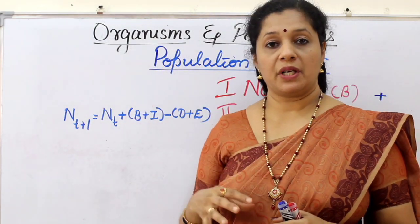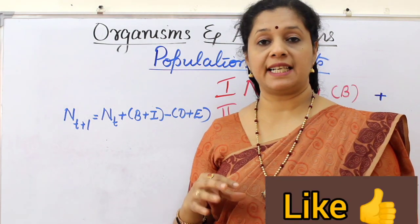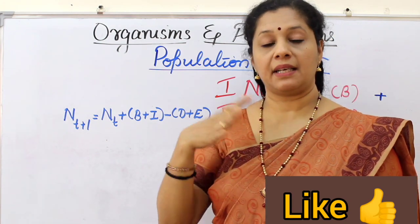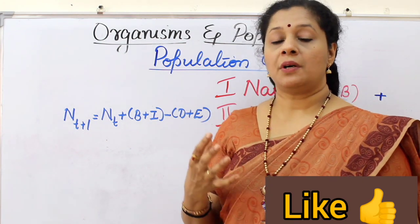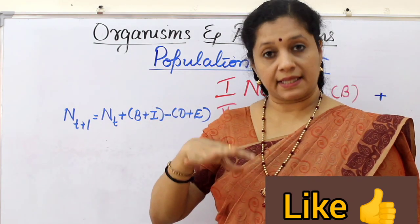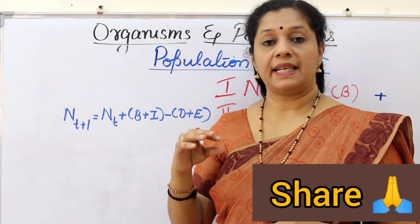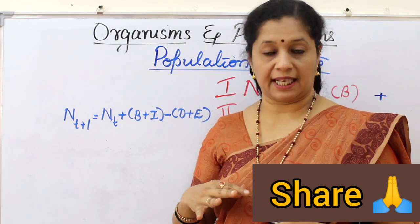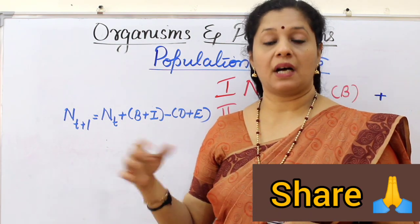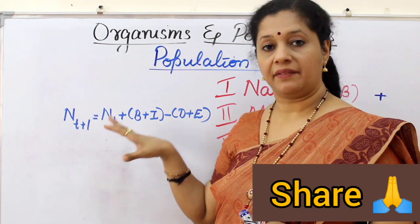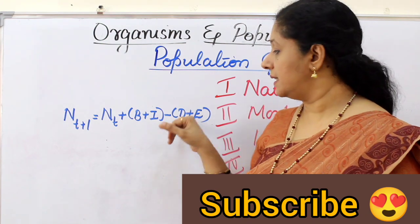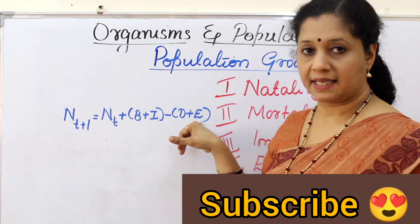The present population density is represented by N. NT means population density at time t — what it is at present. If you want to find out NT+1, that is after one year, the formula is: the present population plus the total of birth rate and immigration, minus death rate and emigration. Birth rate and immigration are plus; death rate and emigration are minus.